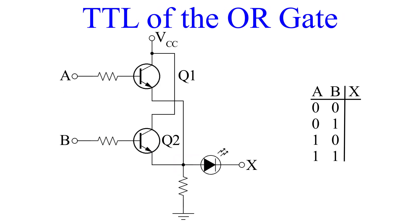Now we come to the OR gate. Let's go ahead and turn on our VCC. With our VCC applied and inputs A and B low, the output is low and there is no LED lit.